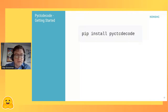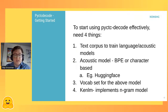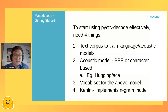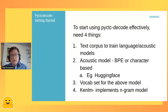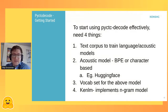To use PyCTC decode effectively, you need four things. First, a text corpus to train the language model on — ideally the same corpus used to train your acoustic model. Second, an acoustic model — PyCTC decode can handle either byte-pair encoded or character-based models; HuggingFace has you covered there. Third, the vocab set for the model. And fourth, the language model itself — we currently support only KenLM, which implements the n-gram model on the backend. You need to make sure your language model is trained on the same vocabulary set as your acoustic model.